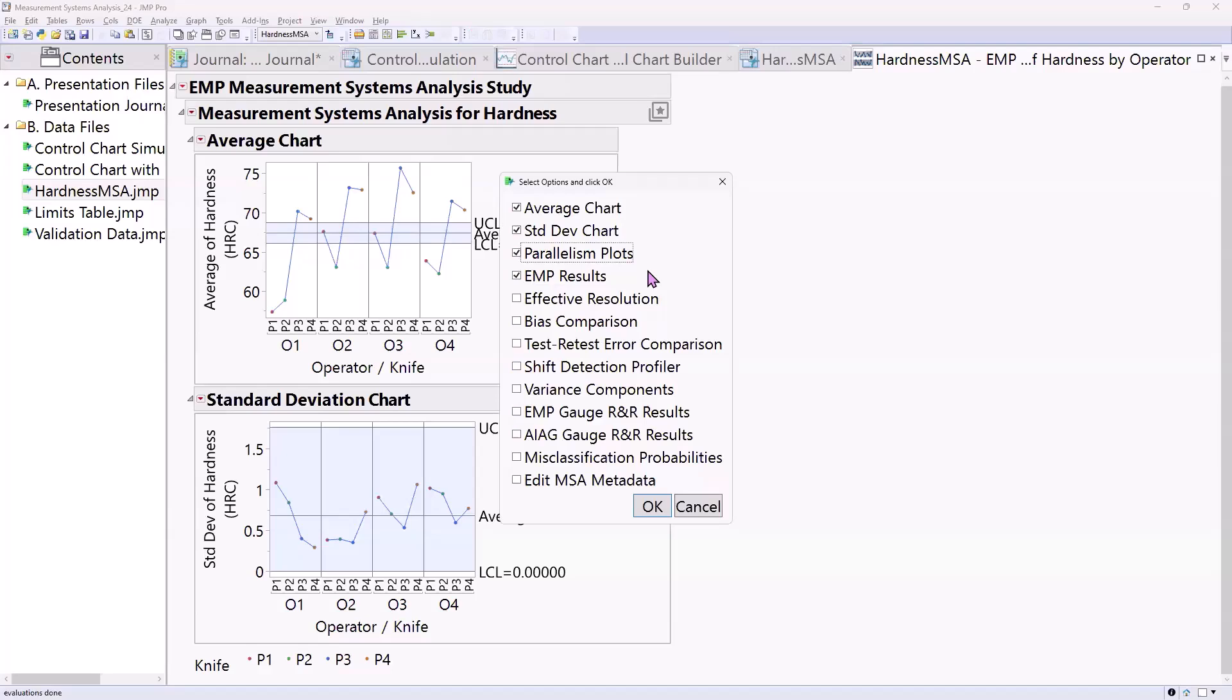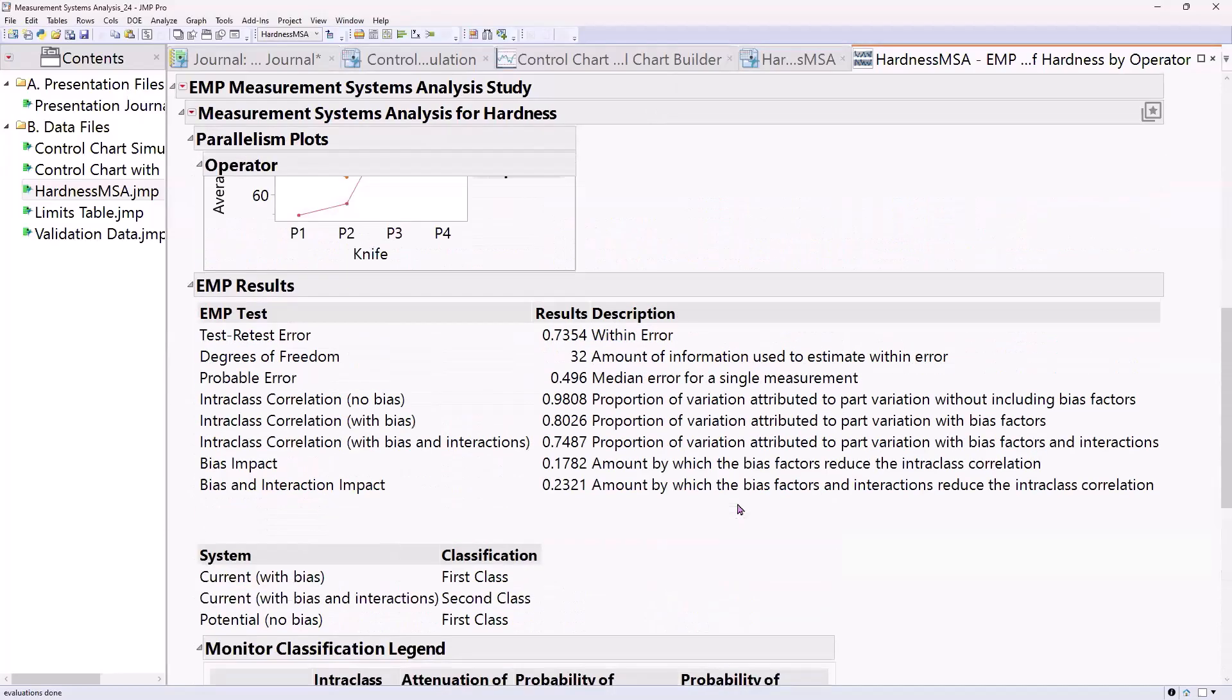Let's turn on EMP results. Yeah, let's just turn on, for now, let's just, yeah, parallelism plots, bias comparison. I think that's fine for now. If we have more time, I'll get into some of the other reports.